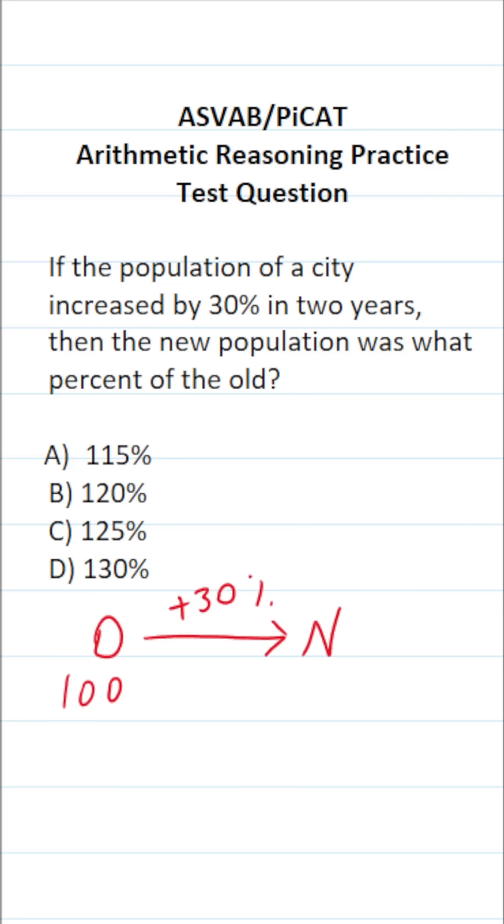We know the new population increased by 30%. 100 times 30% is plus 30 people. So the new population is 100 plus 30, which equals 130 people.